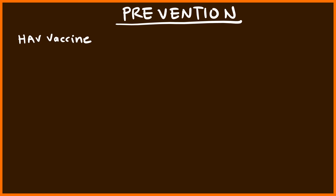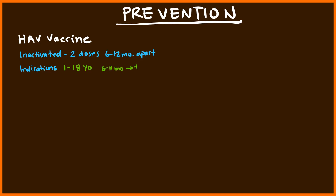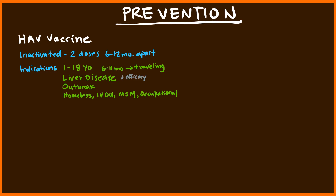Currently, there is an effective Hepatitis A virus vaccine available. It's an inactivated virus which requires two doses about six to 12 months apart. There are specific indications: it's given to all children between the age of one to 18, and babies between six months to 11 months should receive it if traveling. Adults should receive it if they have liver disease — the efficacy is reduced, but it's still important given these individuals are at the highest risk of fulminant hepatic failure. The vaccine is also given during outbreaks, and to people who are homeless, IV drug users, men having sex with men, and specific occupations — specifically, individuals in research working with the Hepatitis A virus.